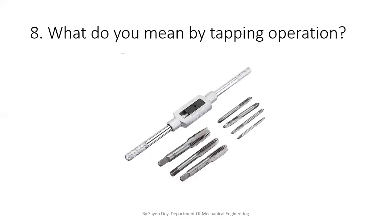The next question is: what do you mean by tapping operation? For internal threading, we use tapping. In this picture we can see a tap wrench. There are several types of taps — mainly we use first, second, and third taps, and we use these three taps step by step. These are the main applications of the tap. If we want to make an internal thread, we use tapping.